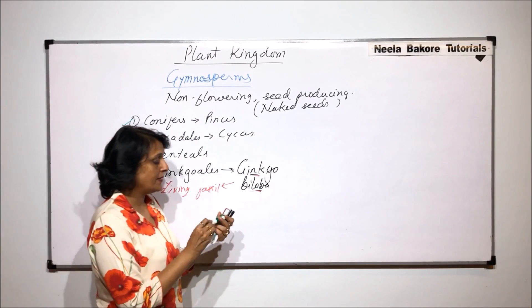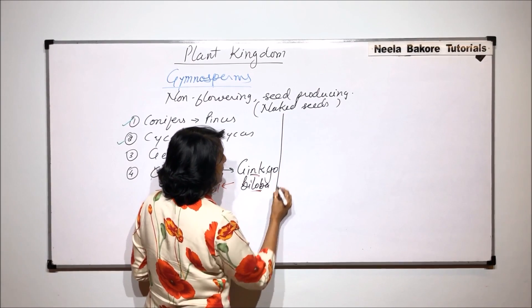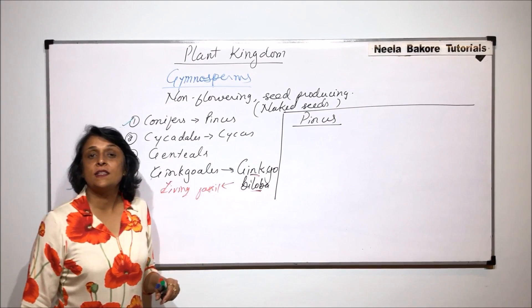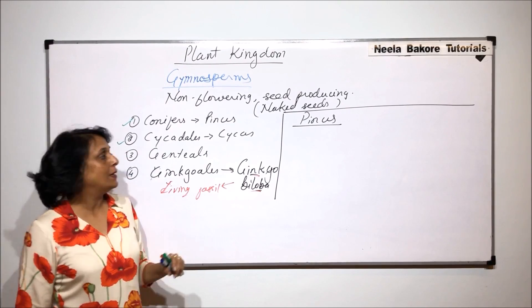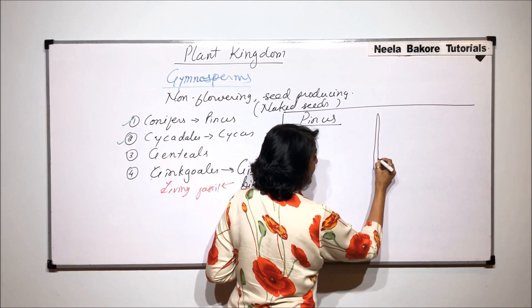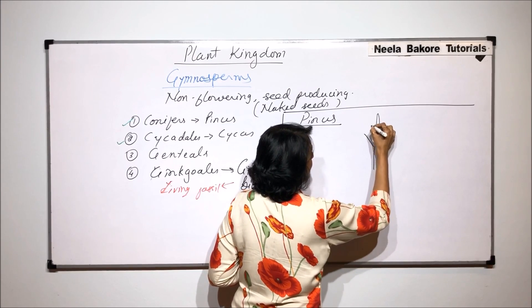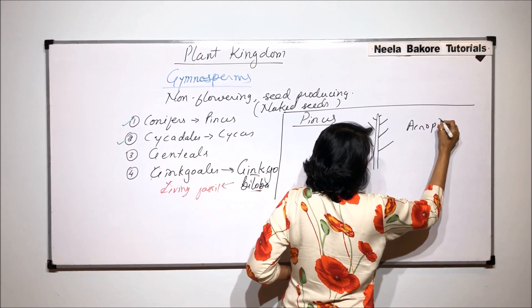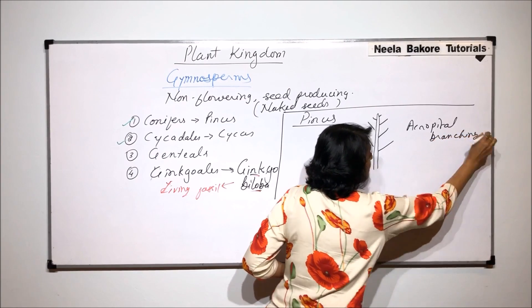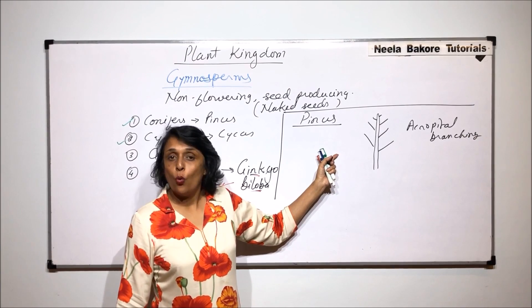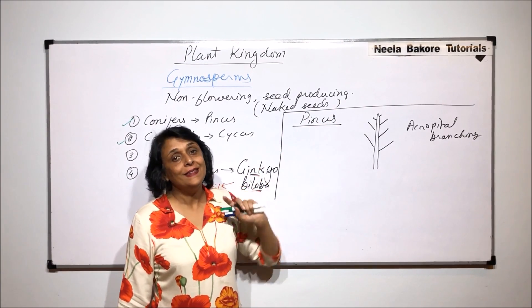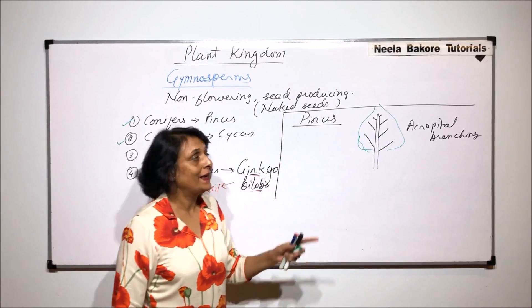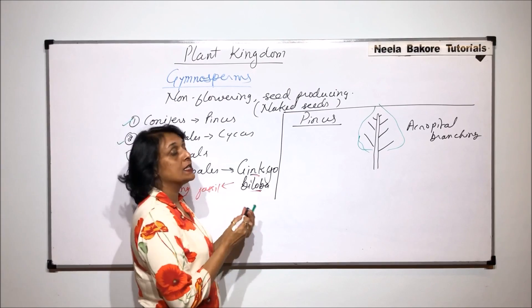We will start with Pinus, which we commonly call the conifers. The reason for calling Pinus and these kinds of plants conifers is the shape of the plant body. The main axis is elongated and the branches are arranged in an acropetal manner, meaning the lower branches are longer and older and the upper branches are shorter and younger. When these get covered with leaves, it gives a typical cone-like shape to the plant, and that is why they are called conifers.